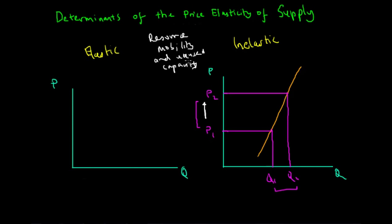In the case of an inelastic good with very little unused capacity, producers cannot produce more at a higher price because they don't have the necessary resources available and cannot mobilize their existing resources from other areas of production, since those resources are immobile.